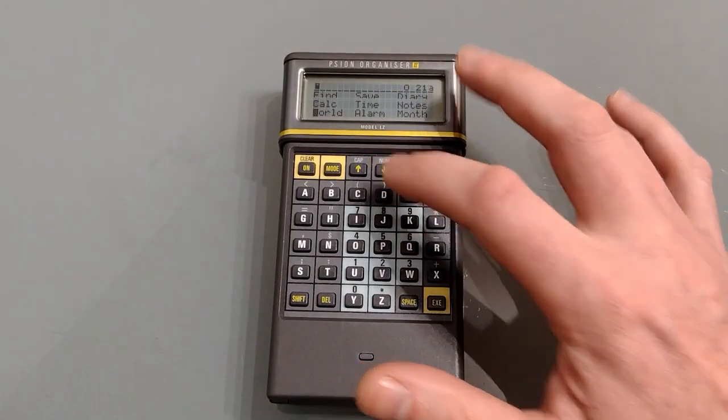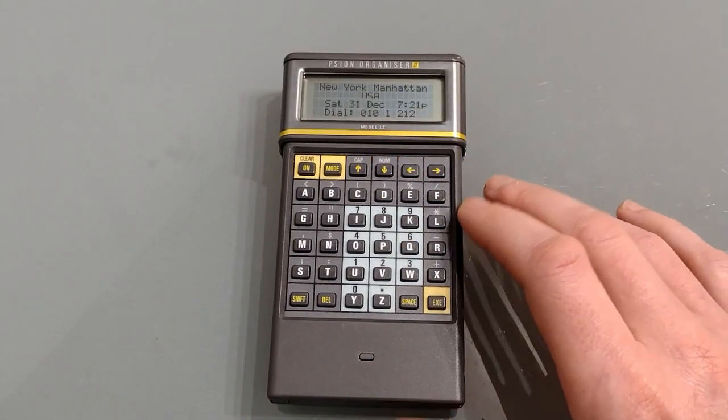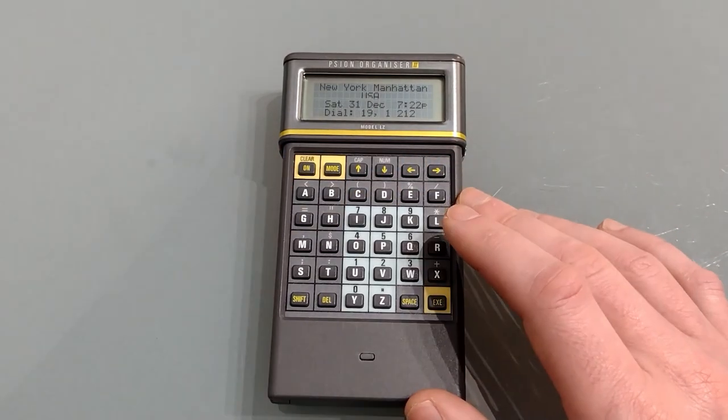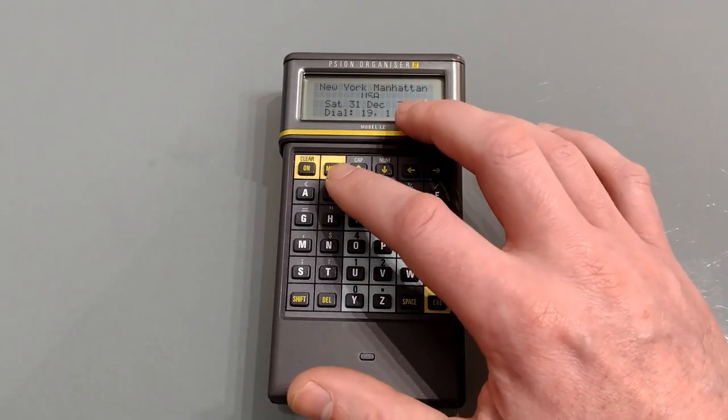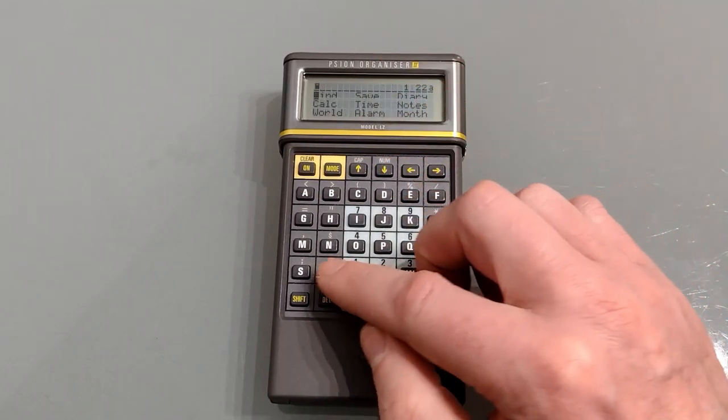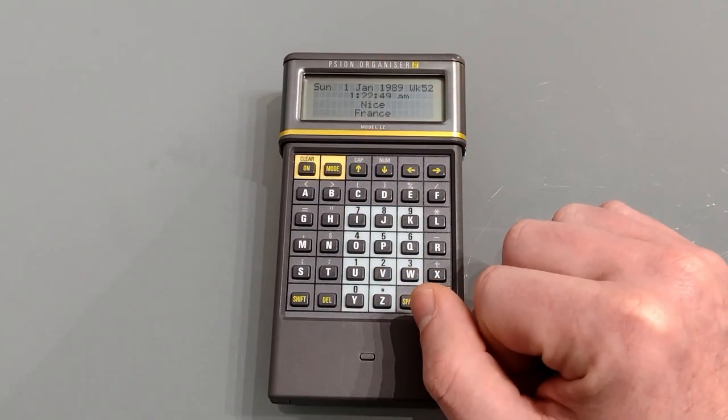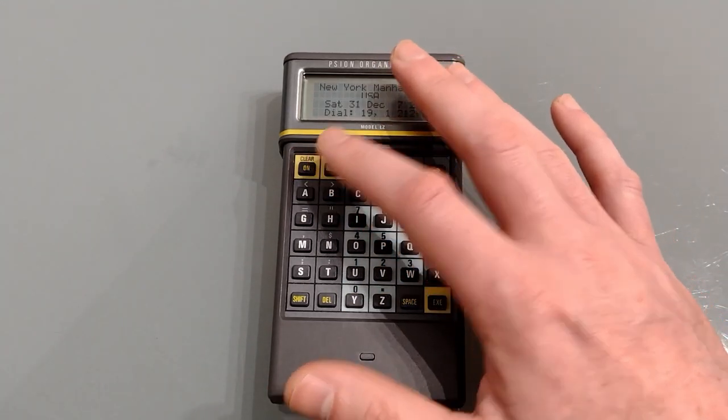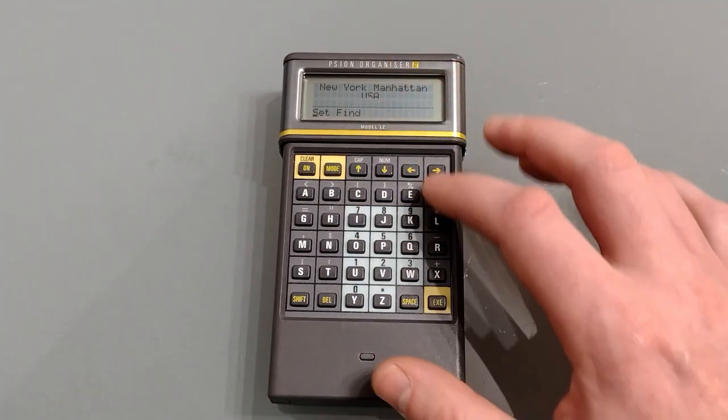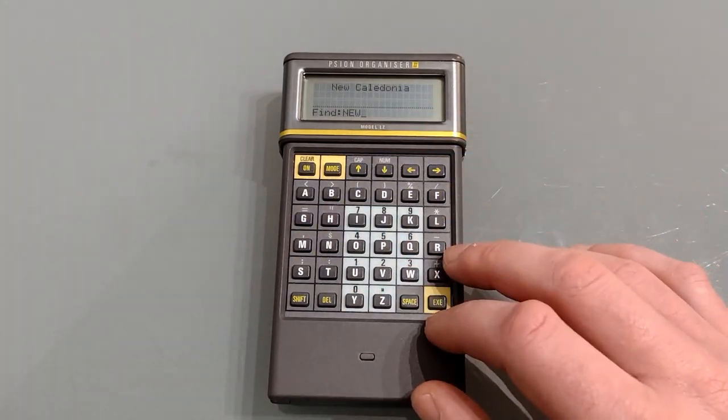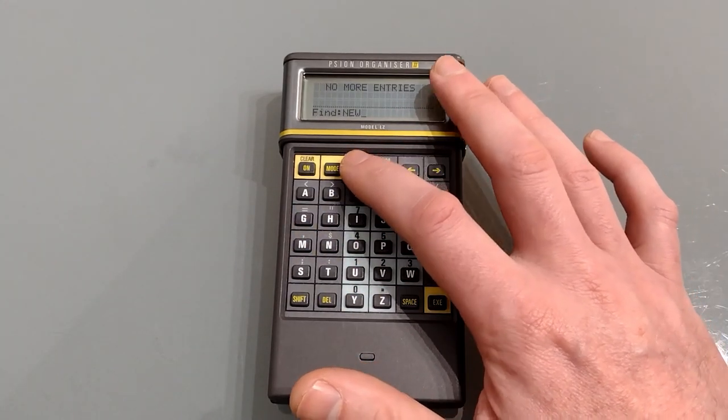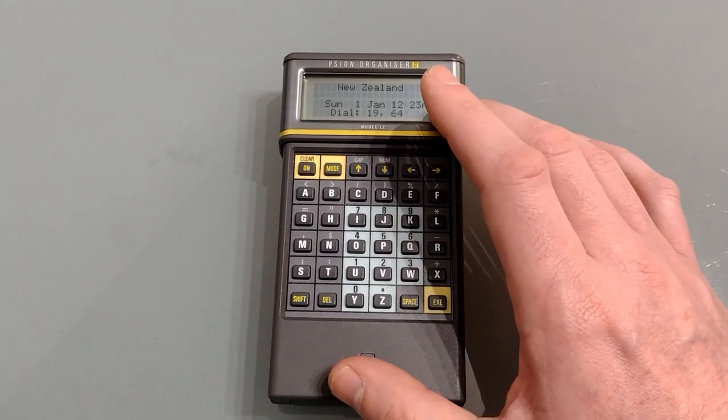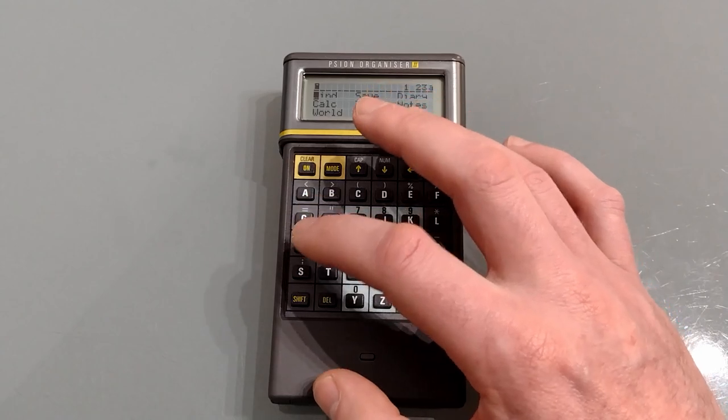After notes we've got world. This is a world clock. So in here you can set a destination like so. This sets your main clock to that region. So if we go back out of here and go into time, there we are, we're now in Nice rather than London and it's adjusted the time accordingly. Going back into here we can find a different place by typing in a couple of letters and then scroll up and down through the file system to find the one you want. Pressing execute sets that as your world time and when you come back in it'll remain the same.